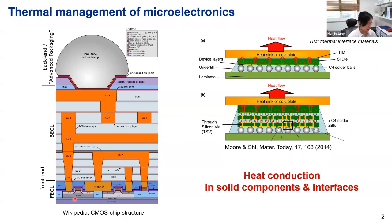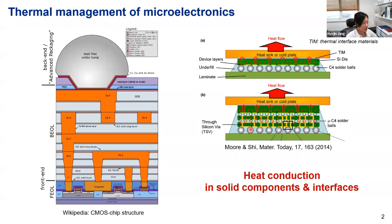Heat is generated in the transistor layer during data operations — charge crossing through the transistor channel generates heat via Joule heating. That heat must propagate through the silicon substrate, cross this interface, and eventually be released to the outside at the heat sink surface. This is a single-layer chip package. If you stack chips vertically, the situation is worse because we increase the heat transfer path — heat must pass through different substrates and solder points before reaching the heat sink surface.